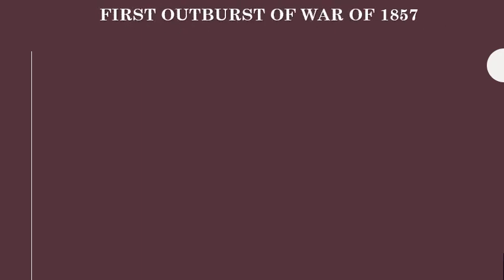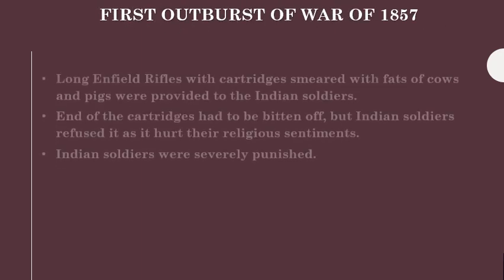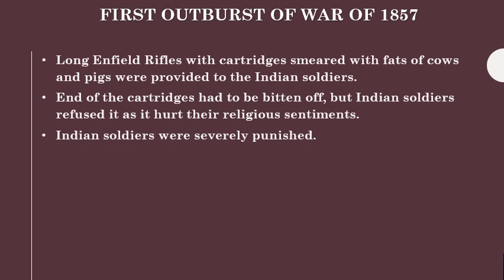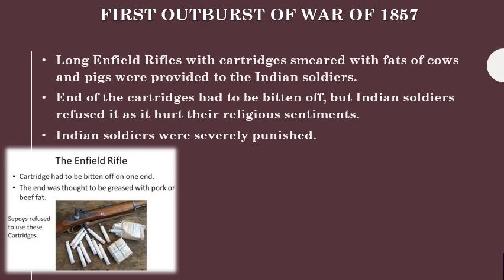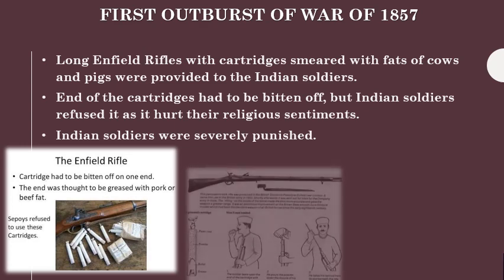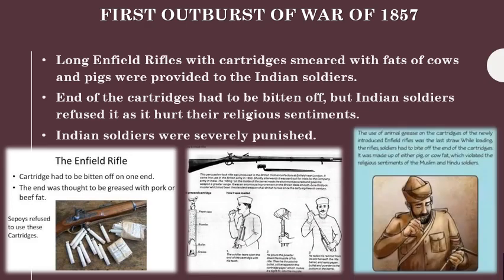Let us now study the first outburst of the war of 1857. In 1856, the British provided new long-barrelled rifles to Indian soldiers, who were required to bite the end of the cartridges. News spread that these cartridges were greased with the fat of cows and pigs. This hurt the religious sentiments of both Hindu and Muslim soldiers. Disciplinary action and severe punishment were given to those soldiers who refused to use these cartridges.